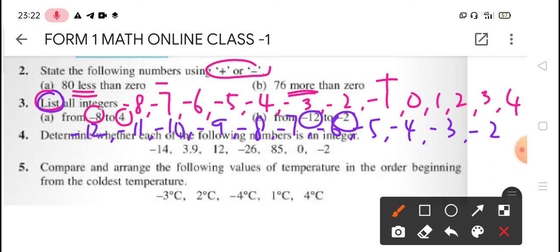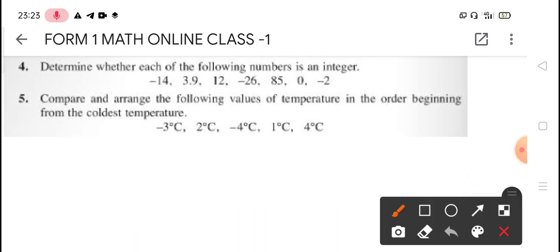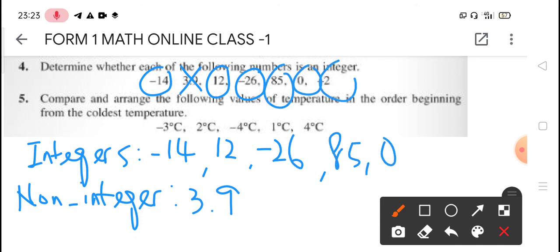And next, we move on for the next question, number 4. Determine whether each of the following number is an integer. We want integer, whether this number is integer, yes or no. So there will be some smart student, they will do like this. For question number 4, they write integers, non-integer. So integer, whole number, yes, negative 14. 3.9, no, decimal, so non-integer. 12, yes, whole number. Negative 26, yes. 85, yes. 0, yes. Negative 2, yes. So determine means each number, you have to determine whether they are integer or non-integer. You have to write for every number there.